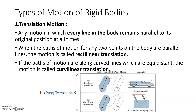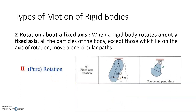Translation motion is divided into two types: rectilinear translation and curvilinear translation. In the first diagram, when the path of motion for any two points A and B in the body are parallel lines, that is rectilinear translation. In the second diagram, if the paths of points A and B are curved lines which are equidistant, we call that curvilinear translation.